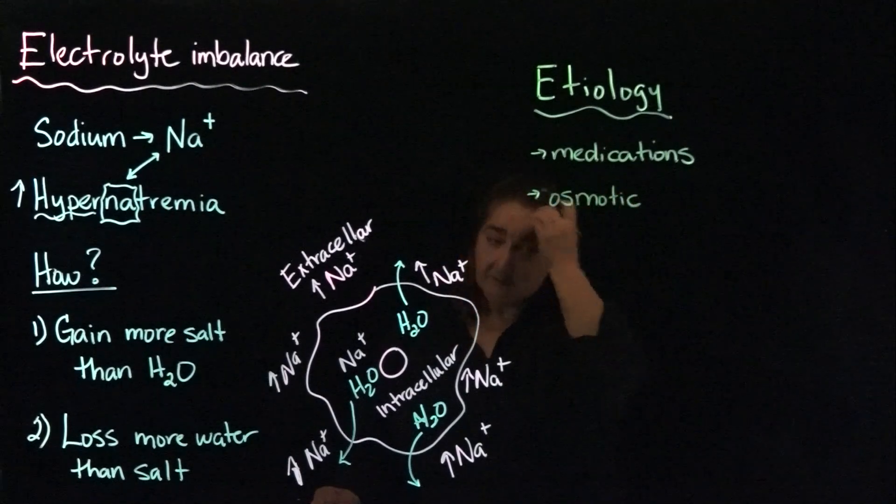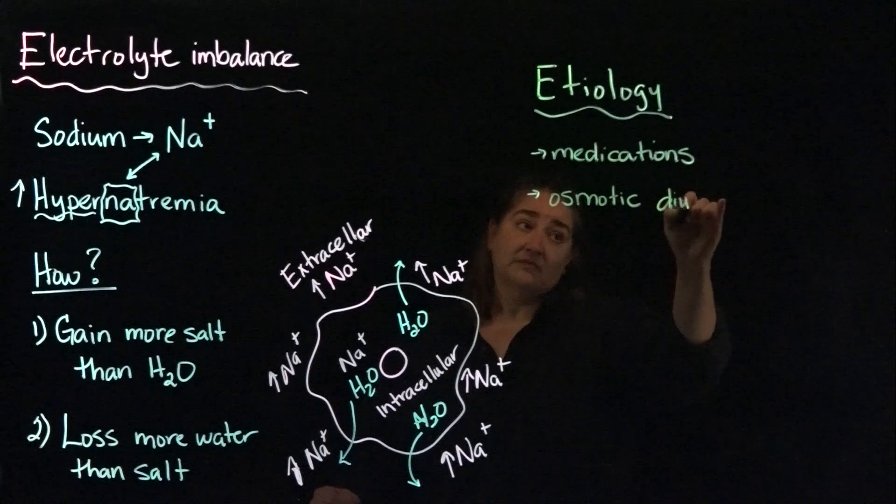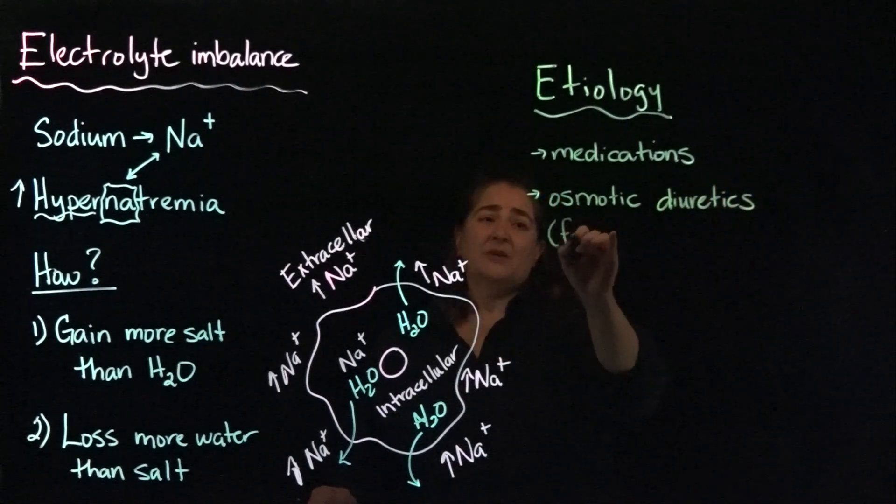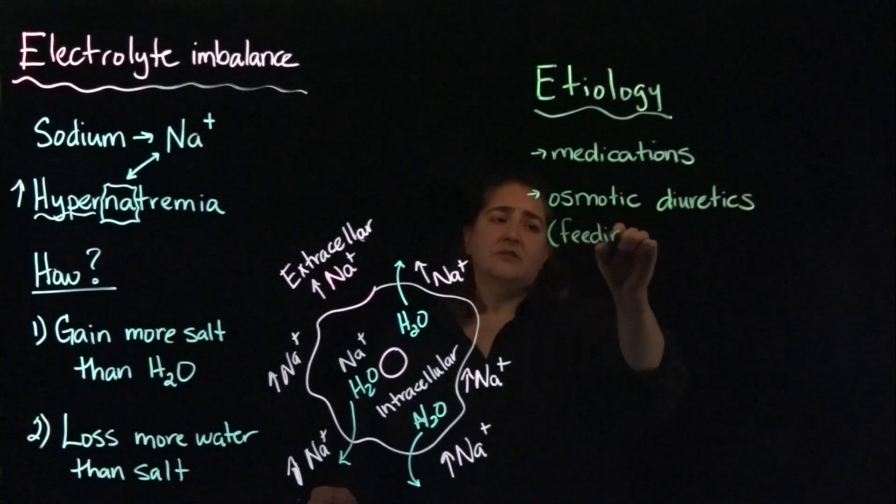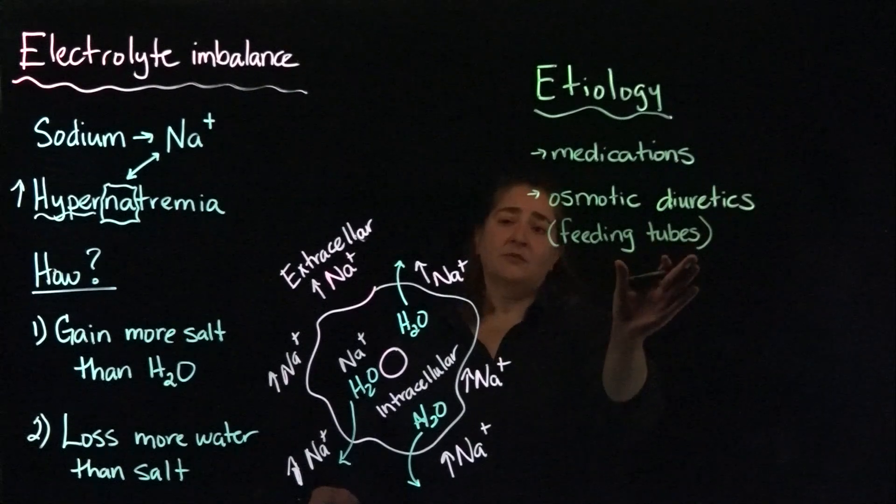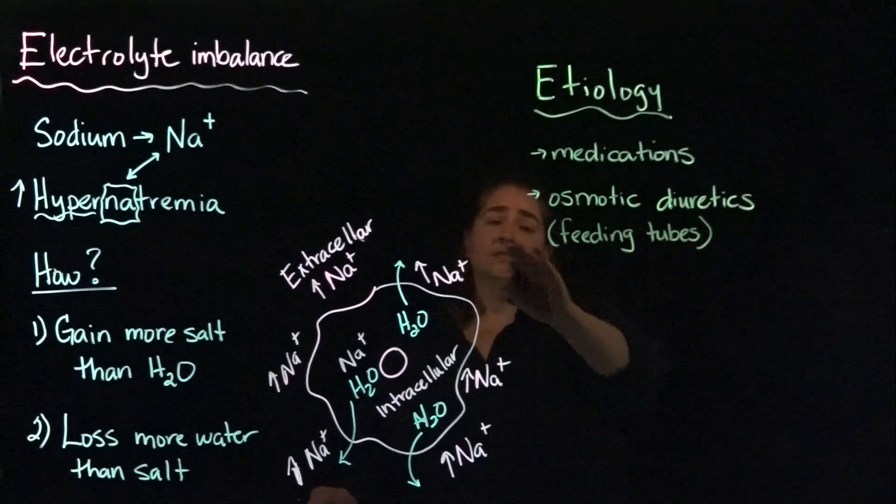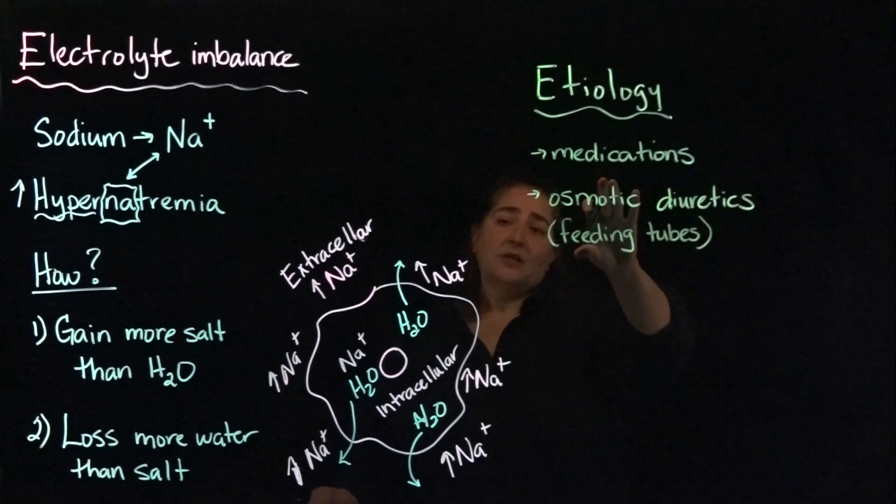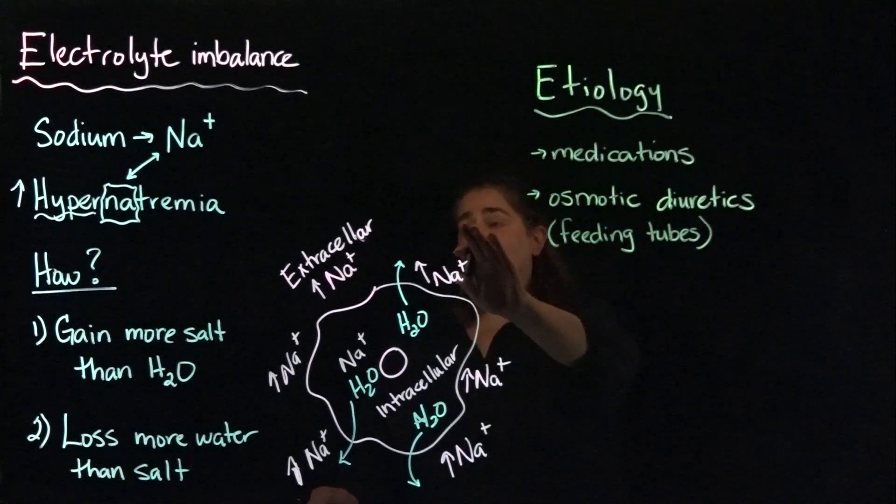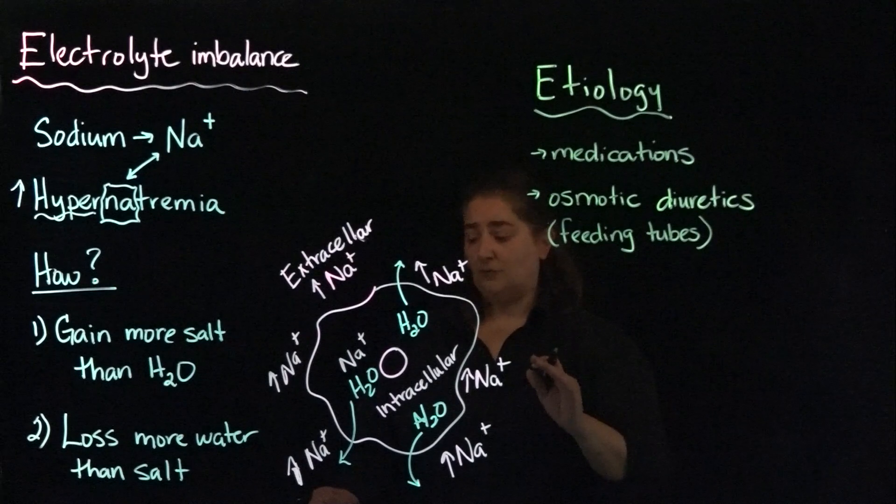Also, osmotic diuretics. Primarily what we're talking about here is feeding tubes. If the individual is on a feeding tube, there are going to be electrolytes and other nutrients in there. If the patient isn't given enough water, that can cause hypernatremia from the feeding tube.